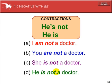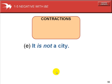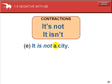He is not a doctor. He's not a doctor. He isn't a doctor. They have the same meaning and both are perfectly acceptable. It is not a city. It isn't a city. The apostrophe in the first example takes the place of the letter I. The apostrophe in the second example takes the place of the O in not.